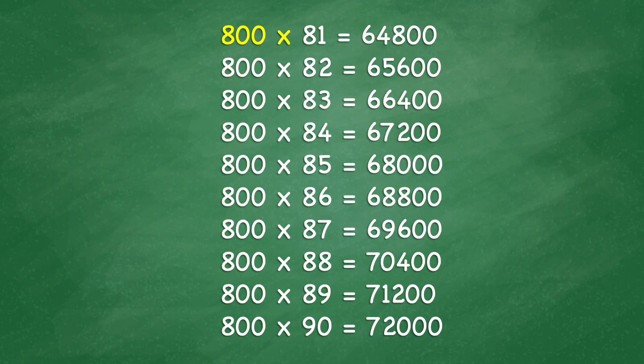800 times 81 equals 64,800. 800 times 82 equals 65,600. 800 times 83 equals 66,400.